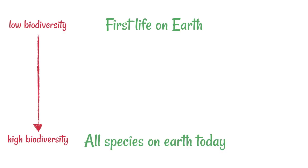If we first consider the origins of life on Earth, it all started with one single common ancestor, which obviously meant there was very, very low biodiversity. Fast forward to the present day and think about all of the species that we've got on Earth today — there are millions upon millions of different species, so many that we don't know how many there are, but we can say for sure that there is a very, very high biodiversity in global terms.